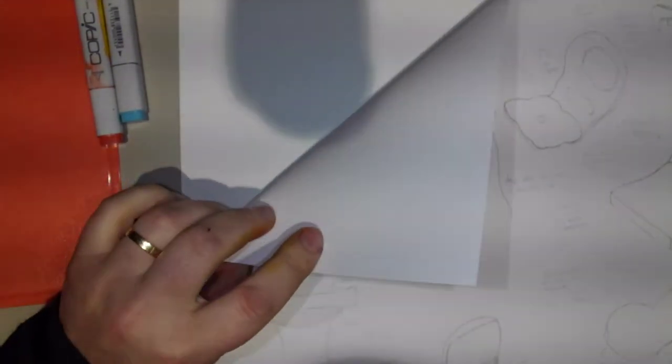Bleed proof is pretty much photocopy paper with a wax surface on the back so it prevents bleed through. You can see here I've got a protective sheet which has got some bleed through from the previous work.